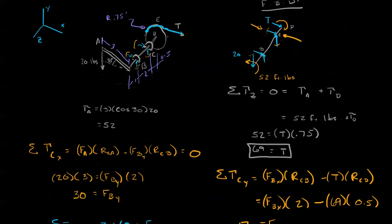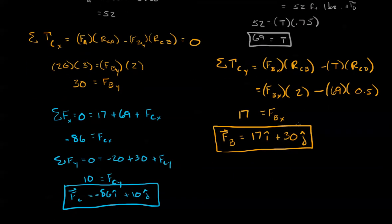Now, that said, we do the same summing in the y direction. And we get that the force at C is 10 pounds. That tells us that the force at C is negative 86 pounds in the i direction, plus 10 pounds in the j direction. We have it in vector format.